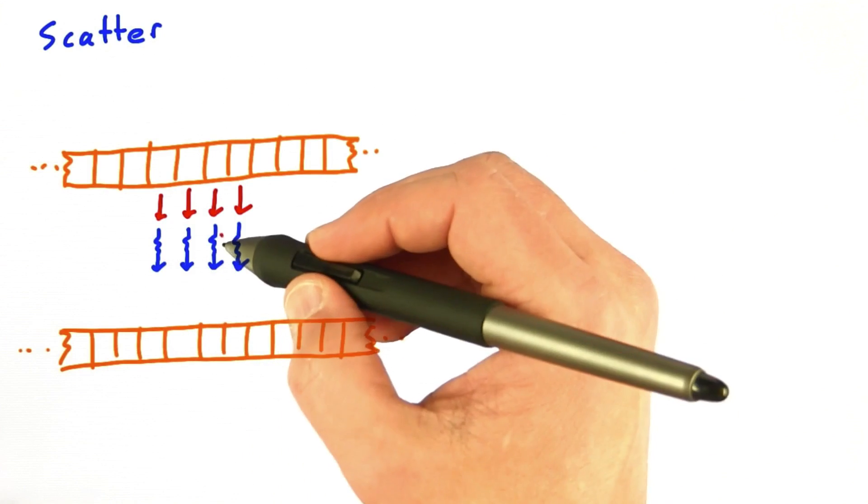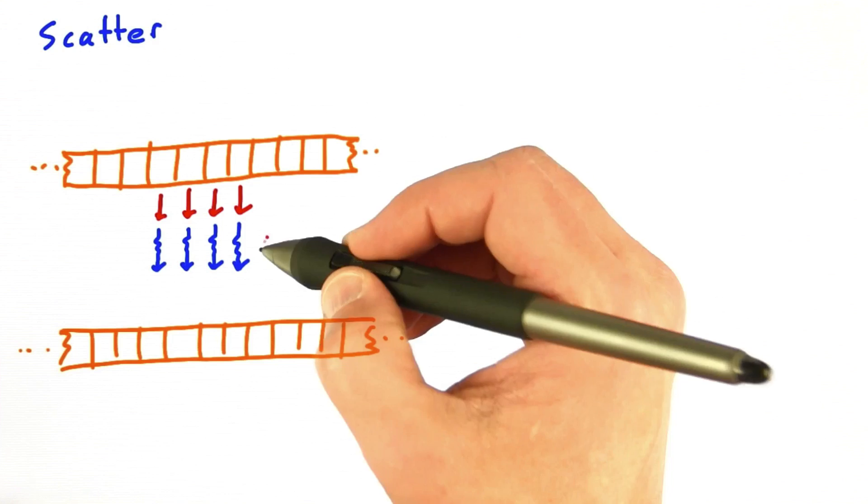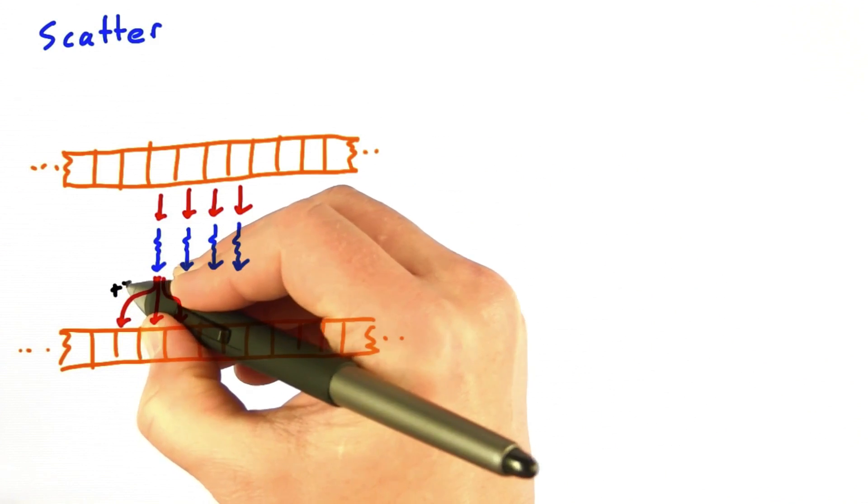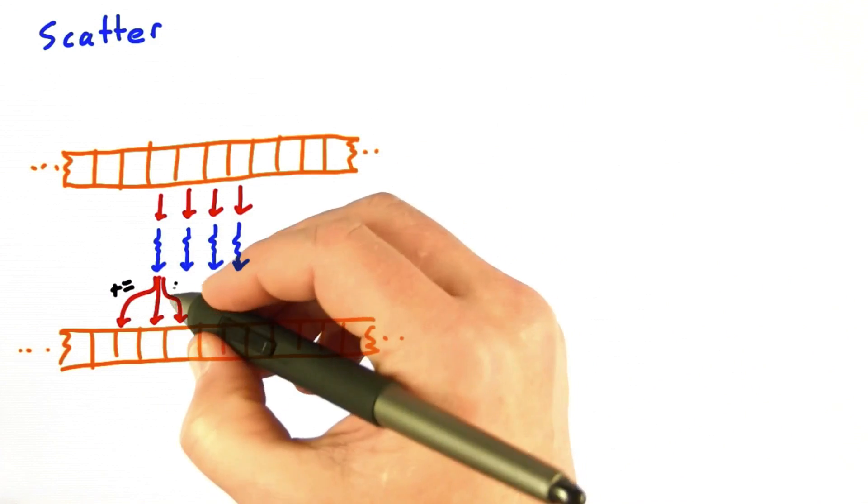Each thread adds one-third of its element's value to the three neighboring elements. So each of these writes would really be an increment operation.